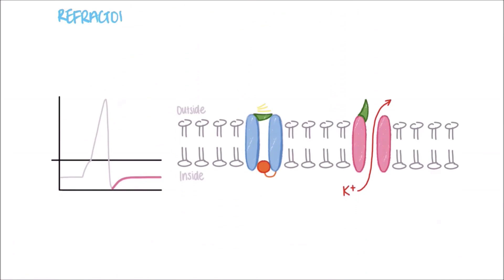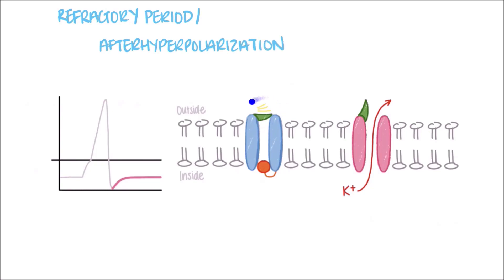In the refractory period, or after-hyperpolarization phase, the activation gates of the sodium channels close, while the potassium activation gates remain open. This causes the slight dip below resting membrane potential, called the undershoot. The voltage at the bottom here is roughly negative 90 millivolts.